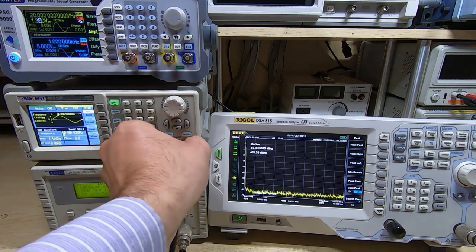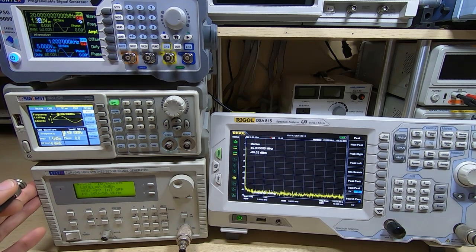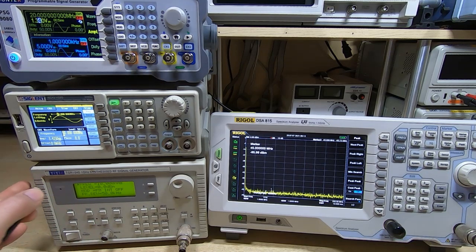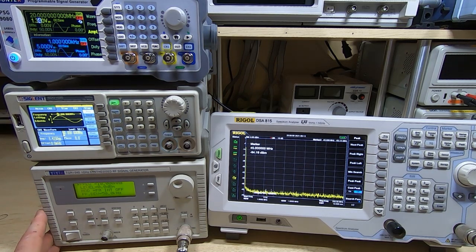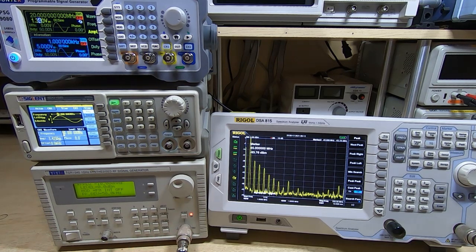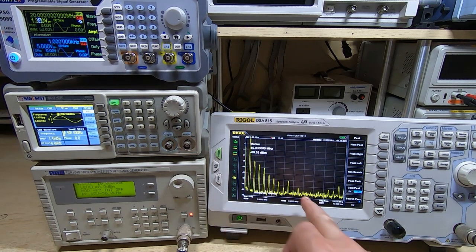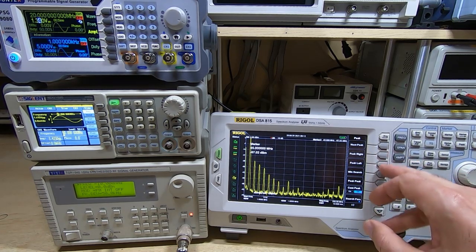If we want to use an actual RF signal generator, then we'd use something a bit like this TTI. This is a TTI TGR 1040. These are no longer made. I bought this back in I think 1999 and I think it cost about 1500 pounds at the time, but that's equivalent to around 2600 pounds in today's money. If I turn this on, you can see again we're getting all these harmonics.